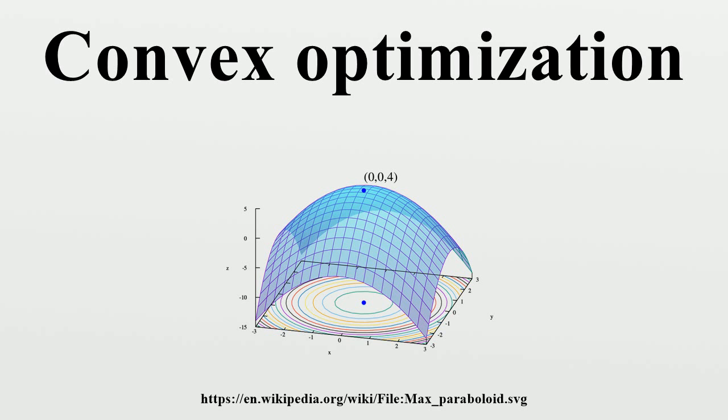In practice, the terms linear and affine are often used interchangeably. Such constraints can be expressed in the form, where is a column vector and a real number.